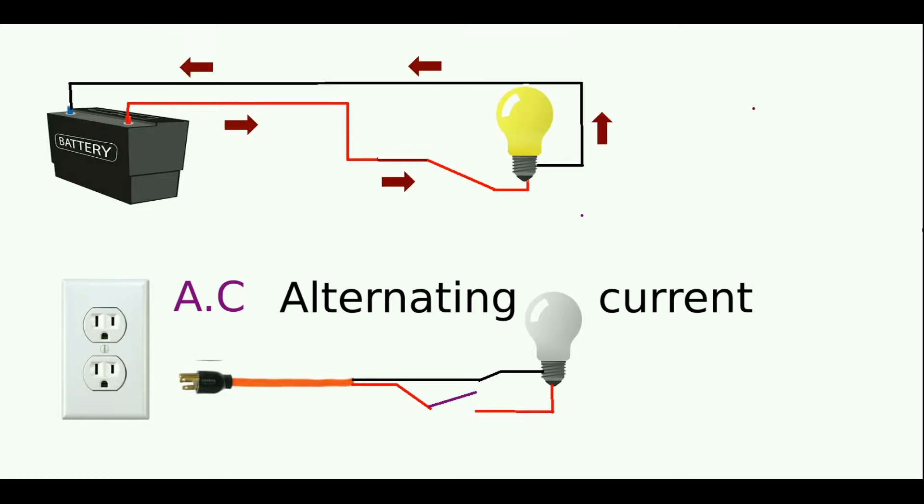When I close the switch for the battery circuit, electrons represented by arrows start flowing in one and only one direction. That's the key with direct current. As long as the switch stays closed, the electrons will continue flowing in the same direction. Now the bottom one, the story is different.